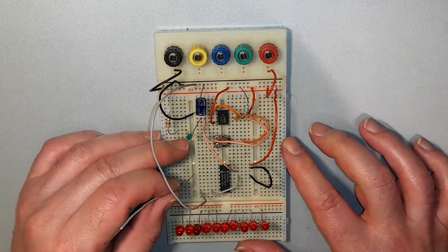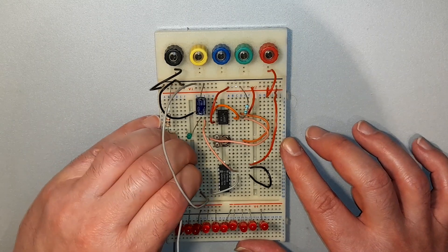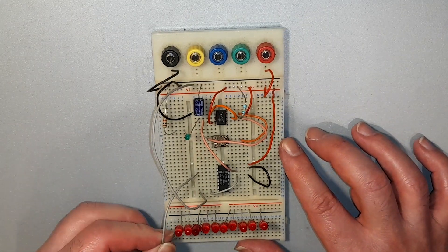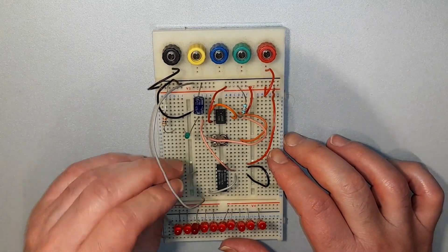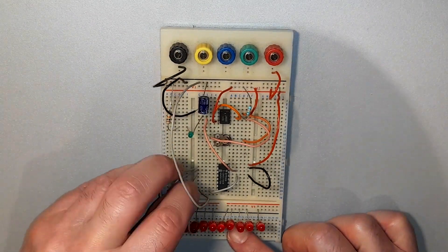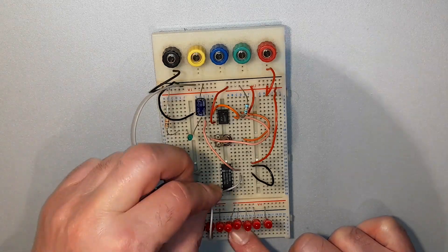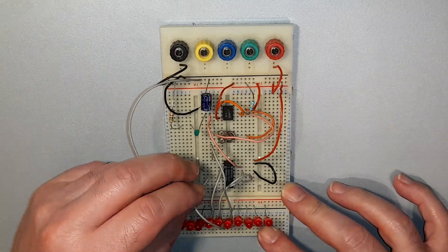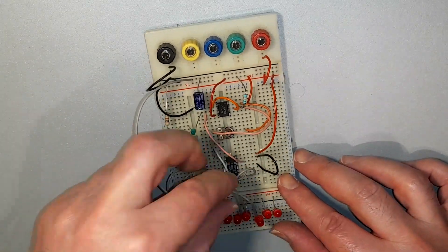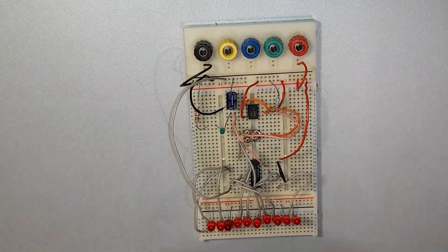Now I connect the anodes of the LEDs to the 4017 from left to right as follows: pins 3, 2, 4, 7, 10, 1, 5, 6, 9, and 11.